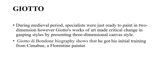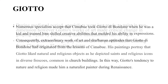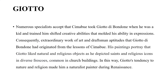Giotto di Bondone's biography shows that he got his initial training from Cimabue, a Florentine painter — a name very important as it changed his whole life. Many specialists accept that Cimabue took Giotto di Bondone when he was a kid and trained him, shifting creative abilities that molded his talent in the arts. Consequently, the extraordinary works and craftsmanship that Giotto di Bondone had originated from the lessons of Cimabue. His paintings portrayed that Giotto liked natural and religious objects, depicting saints and religious icons in diverse frescoes common in church buildings. This tendency toward nature and religion made him a naturalist painter during the Renaissance.